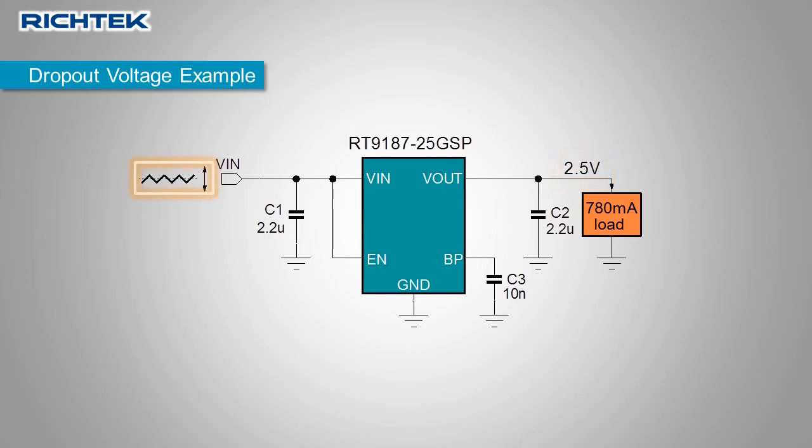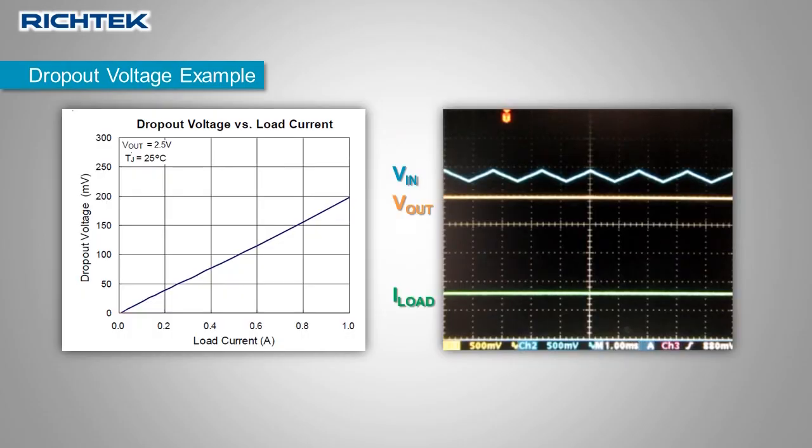For this test, the input voltage is made variable with some ripple and the LDO load current is set at 780mA. According to the RT9187 datasheet, the dropout voltage in this condition is 150mV.